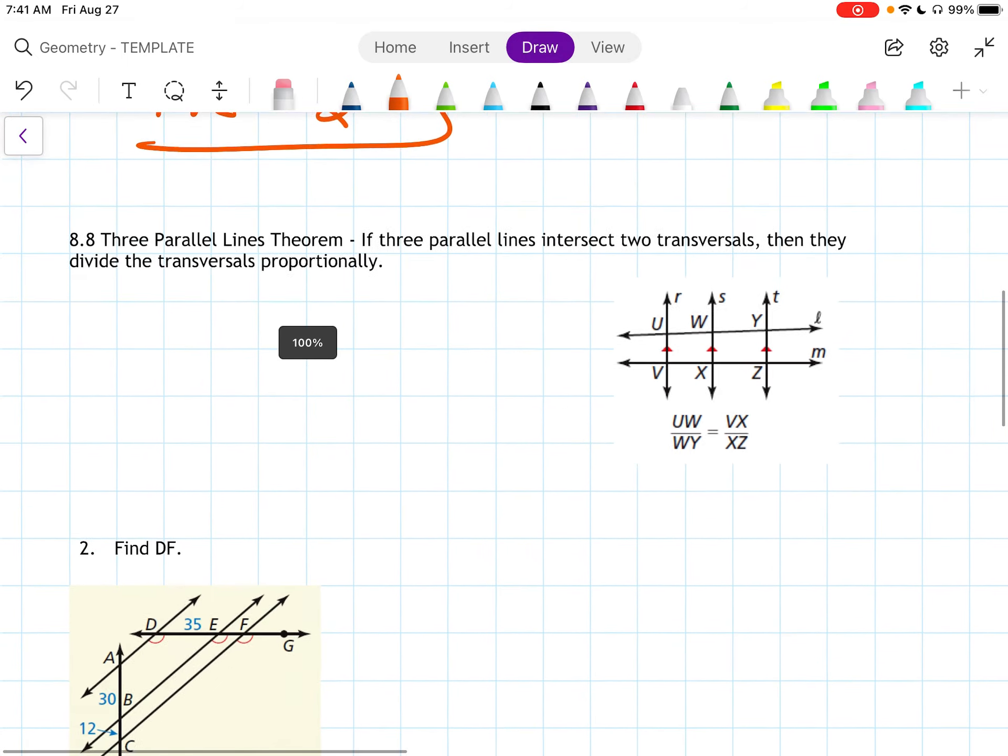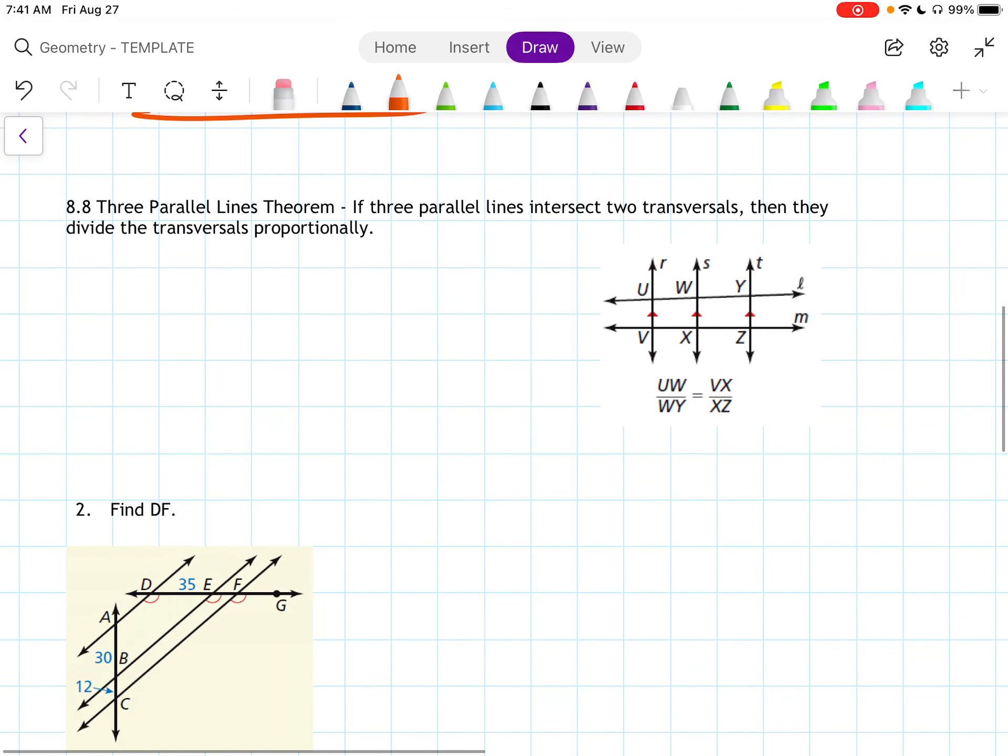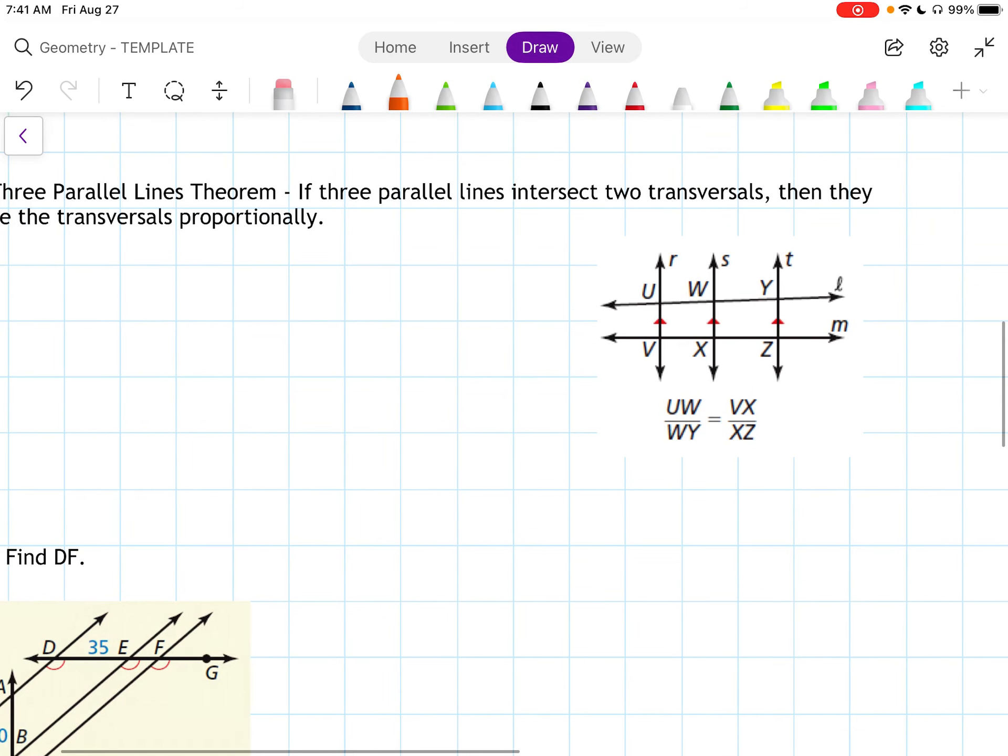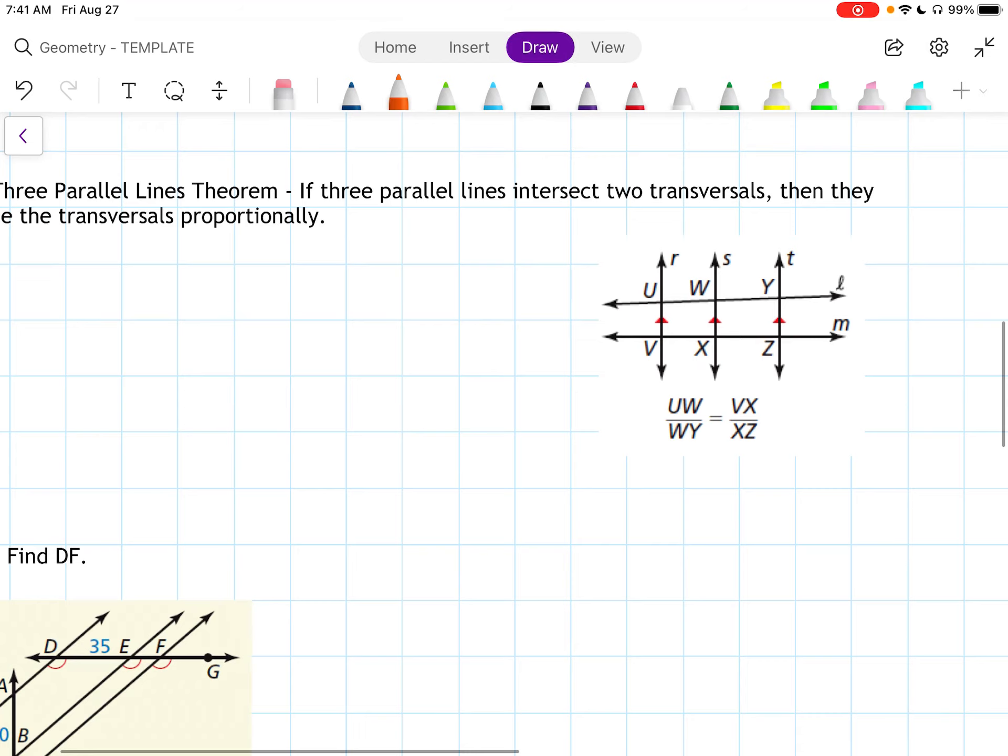8.8. Three parallel lines theorem. If three parallel lines intersect two transversals, then they divide the transversals proportionally. And this is kind of an extension of the triangle proportionality theorem. So we have lines L and M are the transversals. R, S, and T are all parallel.